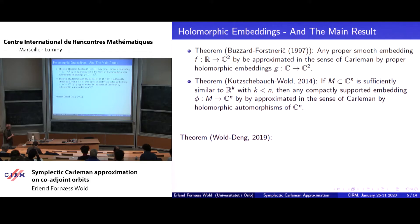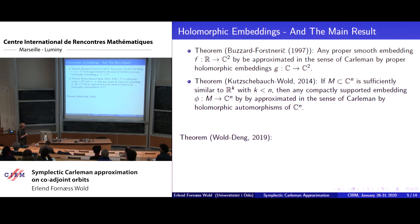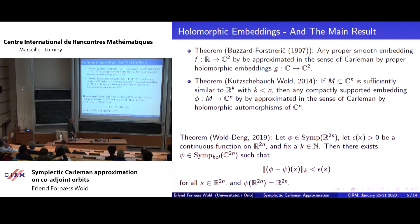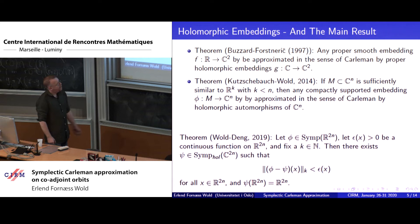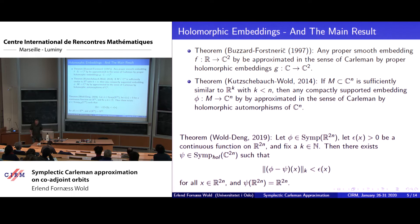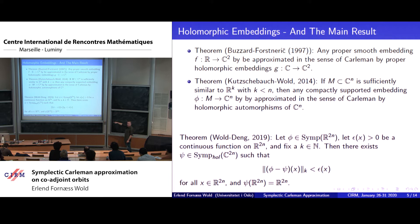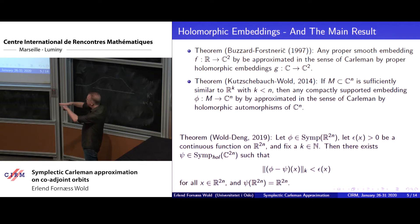Finally, the result today — this is joint work with Fusheng Deng. It is a positive answer to the question we started with: you take a symplectomorphism of R^{2n}, let epsilon(x) be a strictly positive continuous function, and fix an integer k. Then you can Carleman-approximate phi by holomorphic symplectomorphisms, including approximation of derivatives up to order k. This is very different from the previous situation: here the totally real manifold has maximal dimension 2n and we require it to be left invariant, which is not needed in the other case.